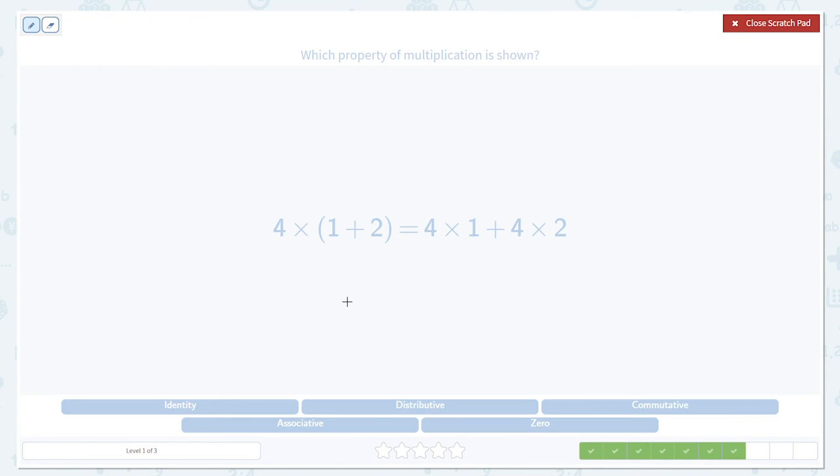Here we have another example of distributive property. We take the 4 and we distribute it. We multiply it by the 1, which gives us this term. Then we multiply by the 2, which gives us this term. Then, since we started with addition on the left hand side, we add those two things together.